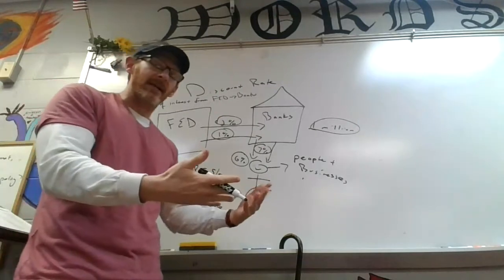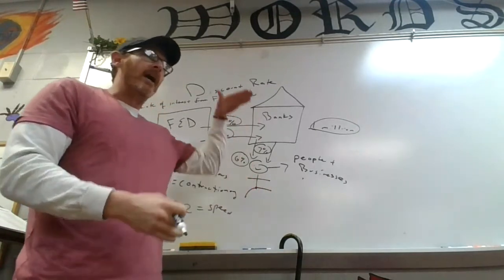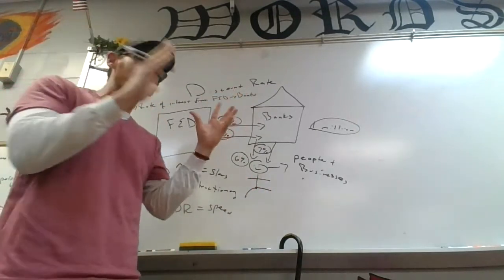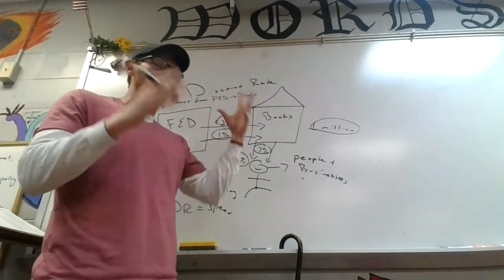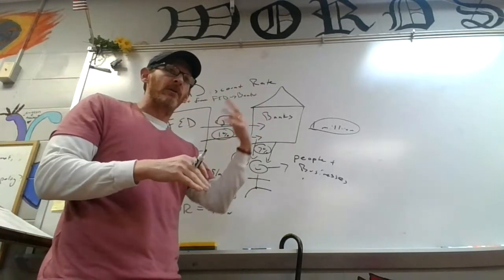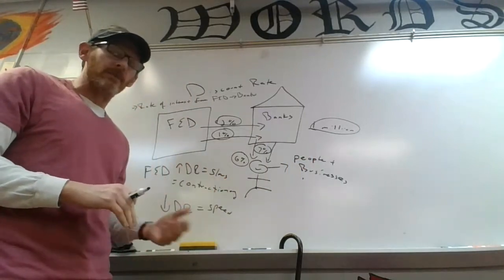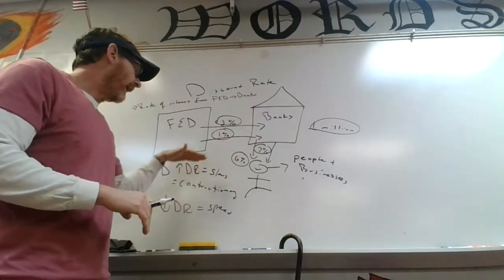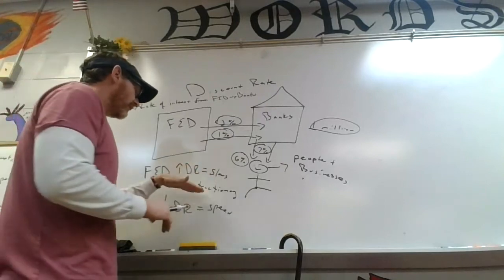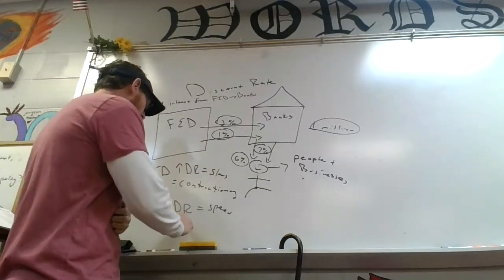The higher the interest rates, the less you want to borrow. And that means it slows the economy down because fewer things are being bought, fewer cars being bought, fewer businesses being started, fewer capital goods being bought. So the higher the interest rate, it's contractionary. The lower, we call it expansionary.